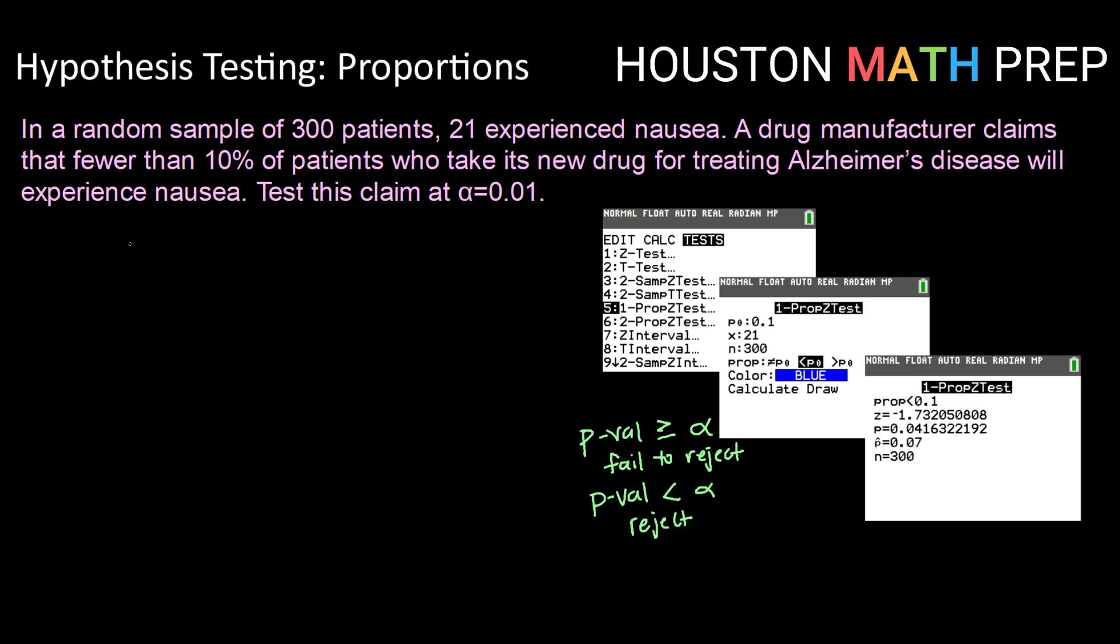In a random sample of 300 patients, 21 experienced nausea. A drug manufacturer claims that fewer than 10% of patients who take its new drug for treating Alzheimer's disease will experience nausea. Test their claim at a significance level of 0.01.